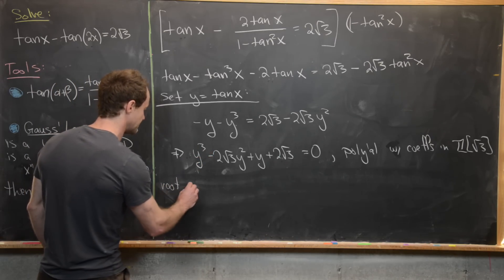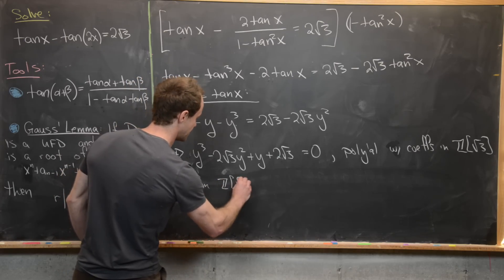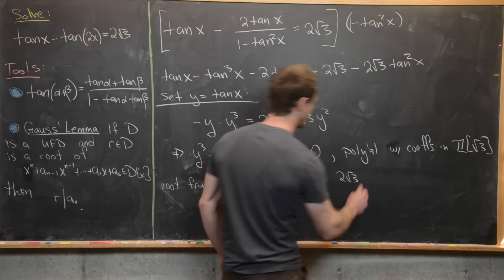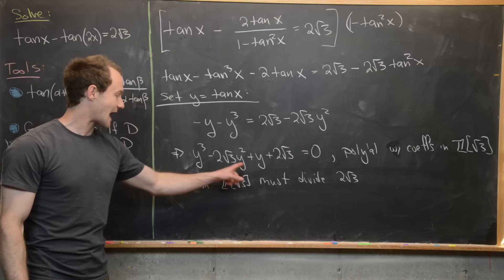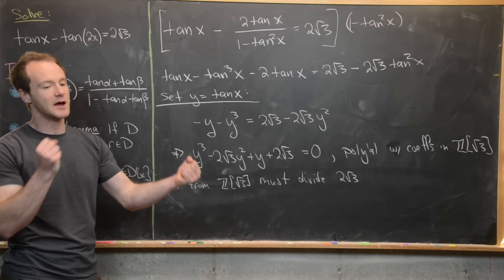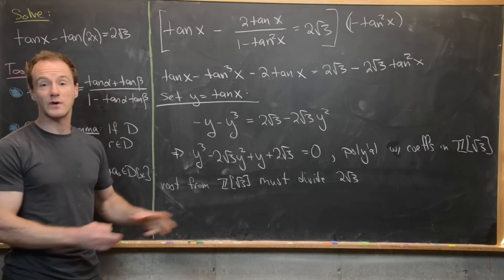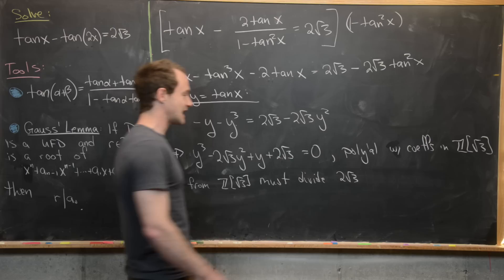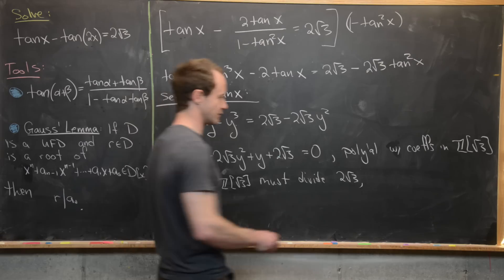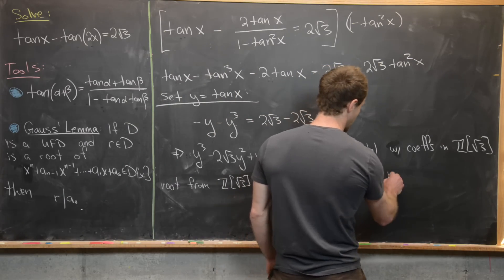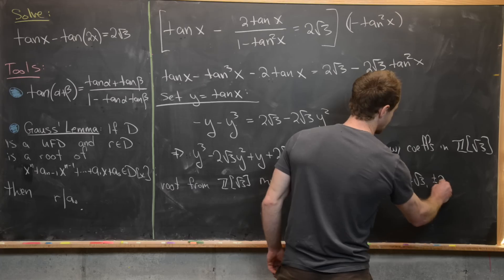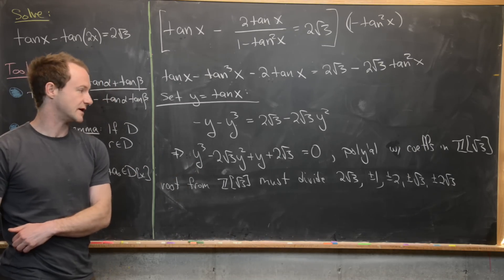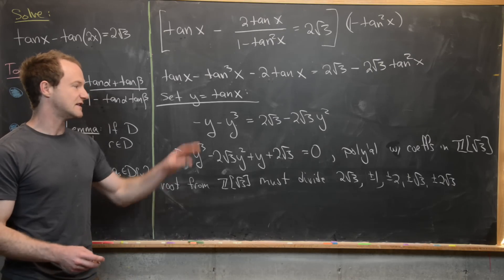Using Gauss's lemma, roots from Z adjoined root 3 must divide 2 root 3, the constant term. Instead of the integers we have Z adjoined root 3, but the rule still applies: roots of a monic polynomial must divide the constant term. That gives us only a few possibilities: plus or minus 1, plus or minus 2, plus or minus root 3, and plus or minus 2 root 3. We check those 8 candidates, and the one that works is root 3.